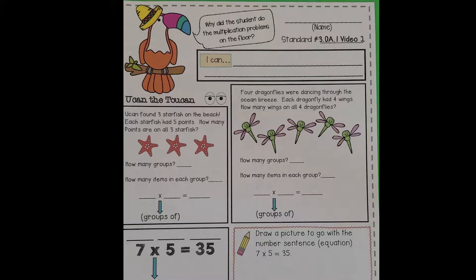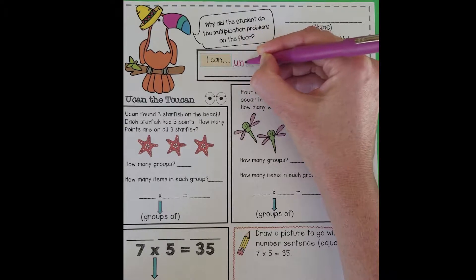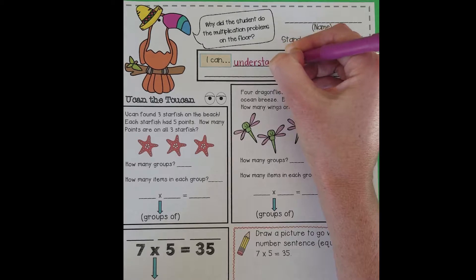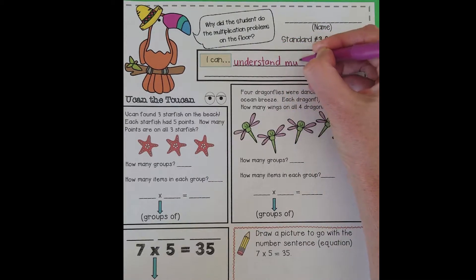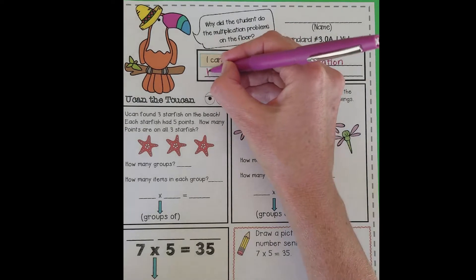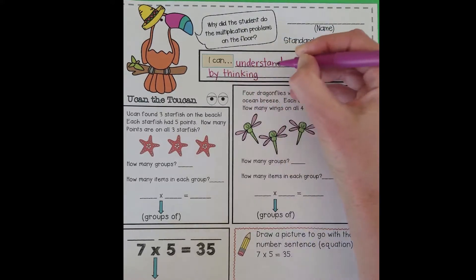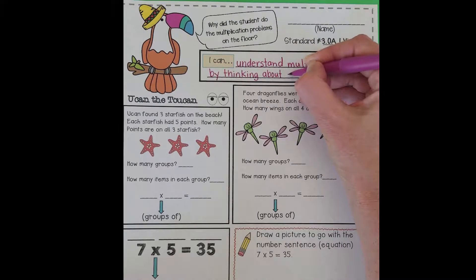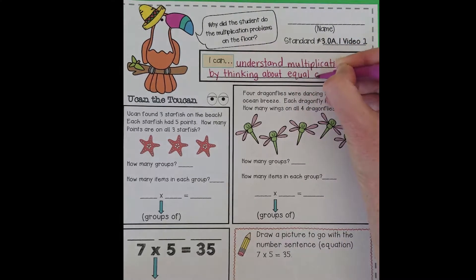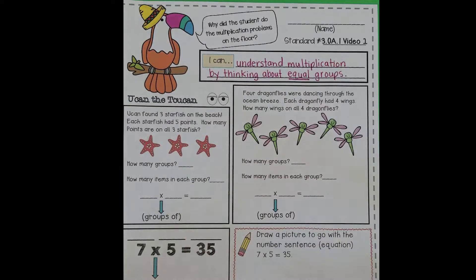Don't agree with me yet? Let's find out. Toucan has an I can for us. By the end of today you can want you to understand multiplication, and he wants you to understand it by thinking about equal groups. This equal word is really important in multiplication. If your groups aren't equal, it's just not gonna work.